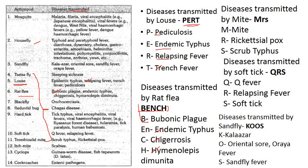For mite-transmitted diseases: scabies is caused by the itch mite — that is well known. For the trombiculid mite, the mnemonic is MRS: M = (trombiculid) Mite, R = Rickettsial pox, S = Scrub typhus. For soft tick, the mnemonic is QRS: Q = Q fever, R = Relapsing fever, S = Soft tick.